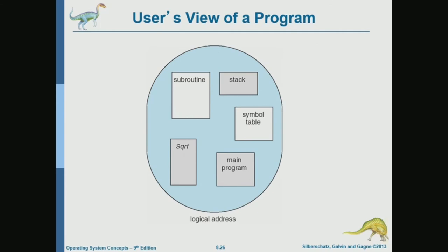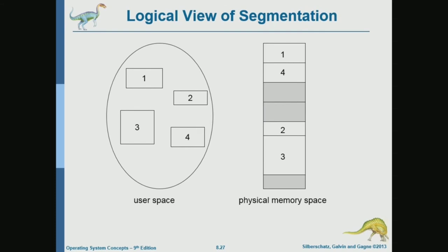In segmentation, the address space of a process may be divided into multiple segments — one for the main program, one for the stack, one for subroutines, one for library functions. That's just an example. More abstractly, here is a process that consists of four different segments. Each segment has a different size, and each segment has a different meaning or purpose.